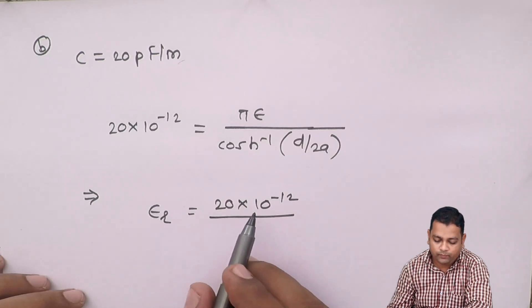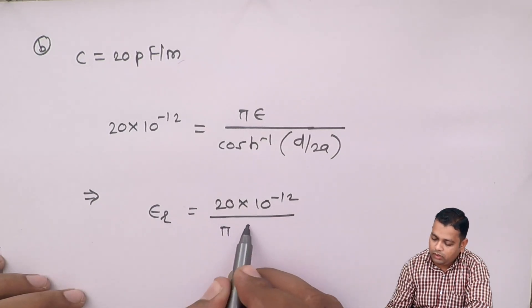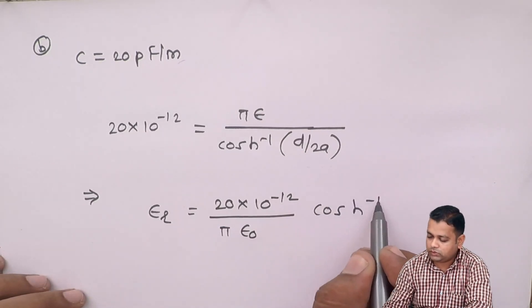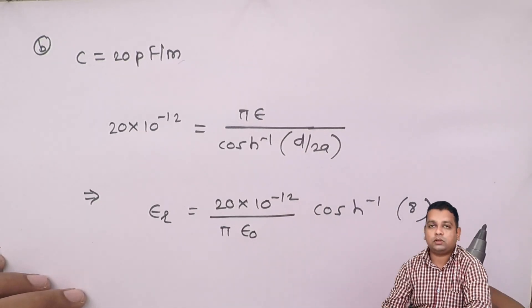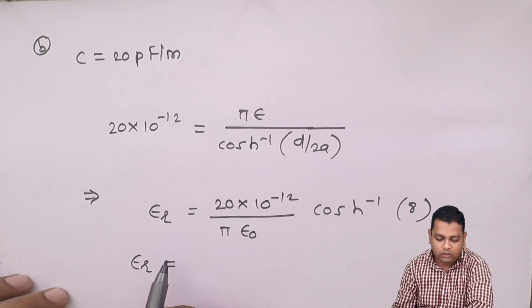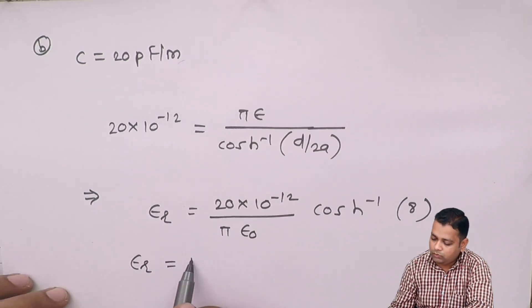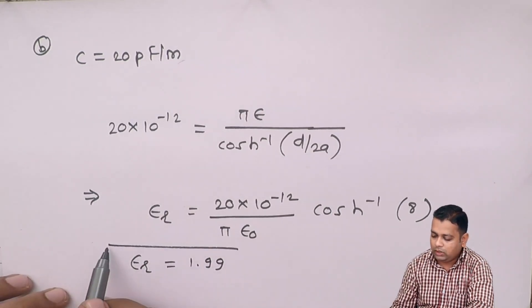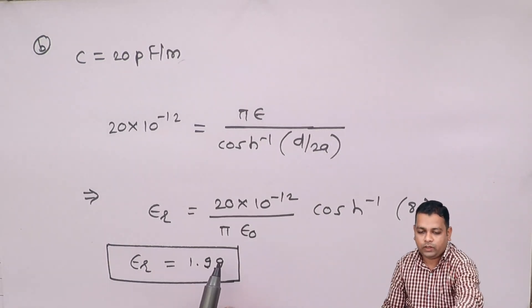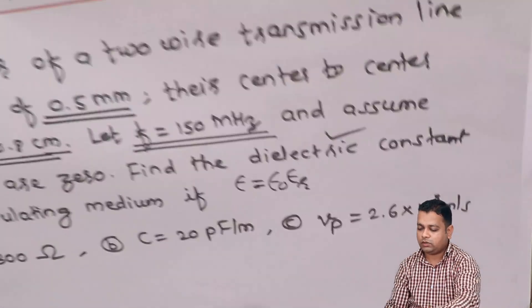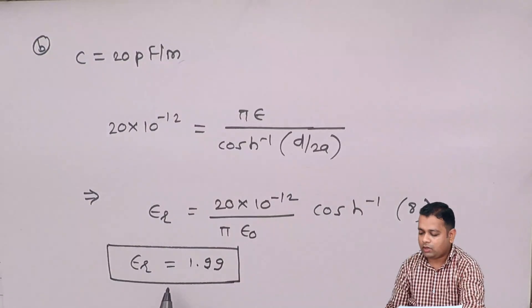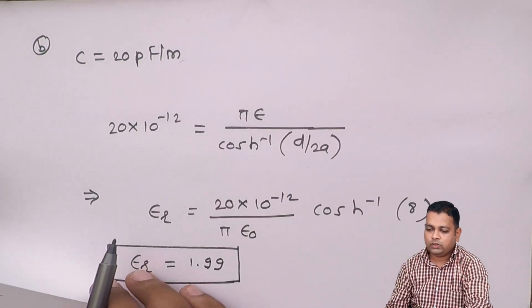It will be 20 times 10^-12 divided by pi into epsilon0. Both constant values are known to us. This becomes cosh inverse 8 by substituting the dimensions provided to us. Therefore, the relative permittivity of the medium will come with the value 1.99. Hence, I outline this particular value, which becomes the answer for part b. If you get back to the problem statement, the answer for part b is epsilon_r equals 1.99.